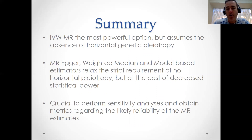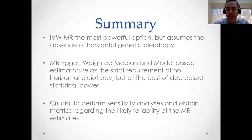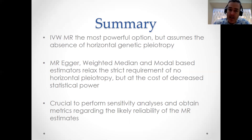When you're doing a Mendelian randomization study, it's crucial to perform sensitivity analyses using these other methods — that will give you an idea of how robust your results are likely to be. In other words, if all the different procedures give you very similar point estimates of the causal effect, then you can be more confident in the results of your Mendelian randomization analysis.